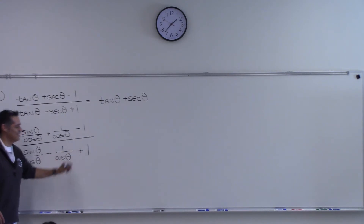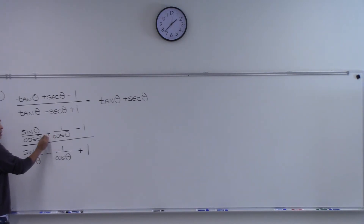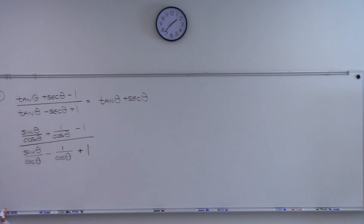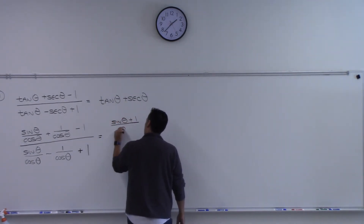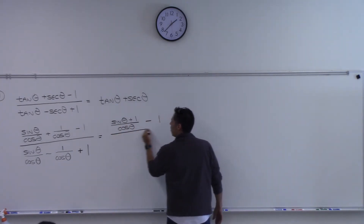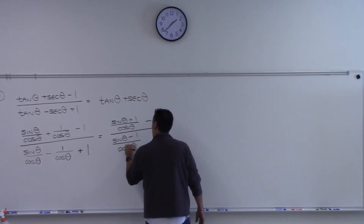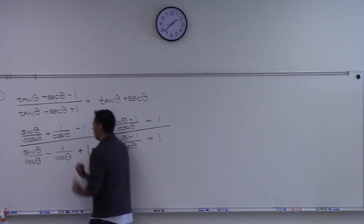Plus one — thank you for catching that. Now, you said you want to put these together? If I put those together, it will be sine theta plus one over cosine theta, and I still have minus one out here. Over here it will be sine theta minus one over cosine theta, and then plus one out here. All I did was put the two terms with the same denominators together.